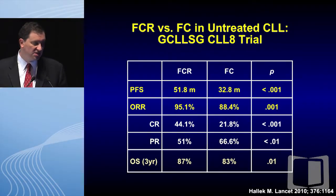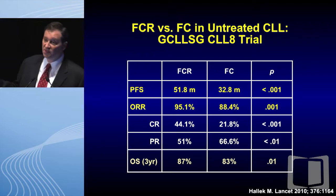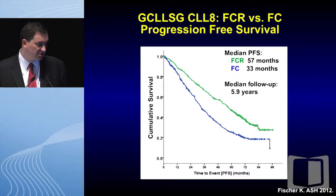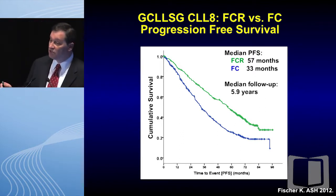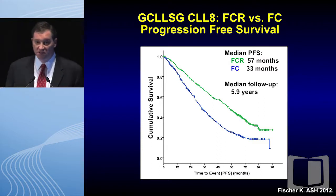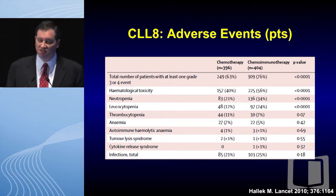Looking at the CLL8 study, focusing on the FCR arm, you can see a progression-free survival of 51.8 months — certainly less than what the CLGB study saw but a good comparator for the BR study. The overall response rate was 95%, with 44% CRs and 87% overall survival at three years. In an update presented at ASH 2012 with median follow-up of 5.9 years, the median progression-free survival improved to 57 months.